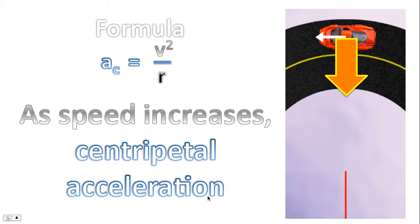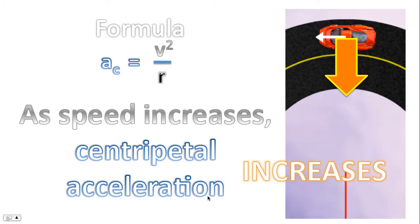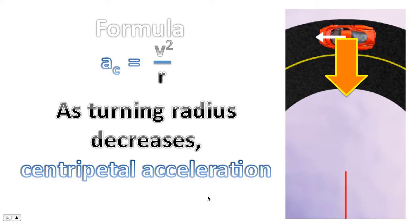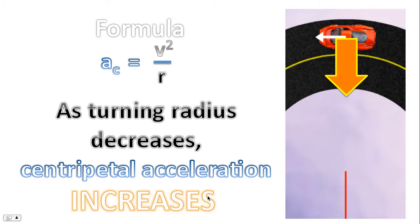Viewing this formula: as speed increases, what happens to centripetal acceleration? It increases. As turning radius decreases, what happens to centripetal acceleration? Once again, centripetal acceleration increases. Higher speed means greater acceleration. Tighter turning radius — tighter turn — means greater centripetal acceleration.